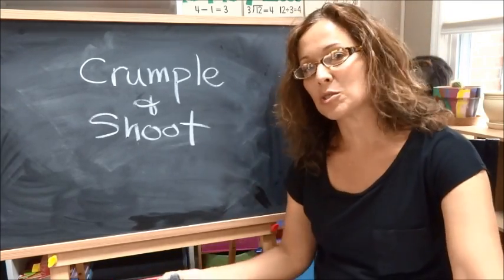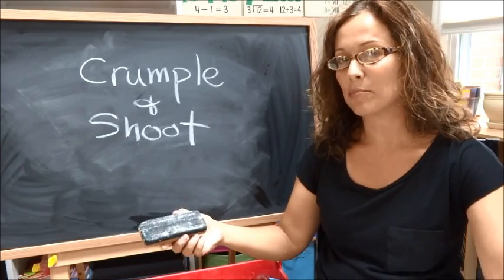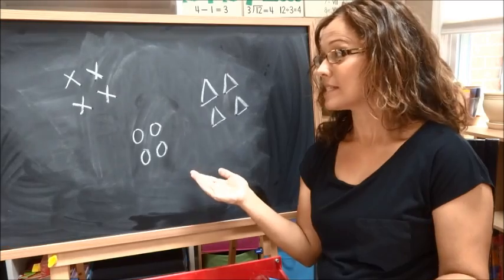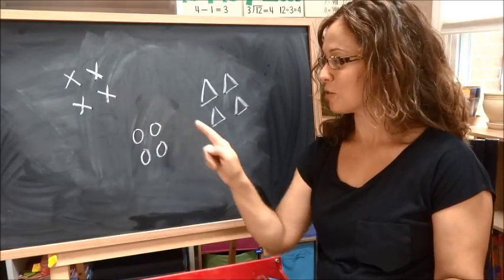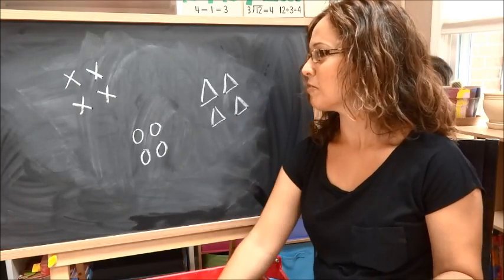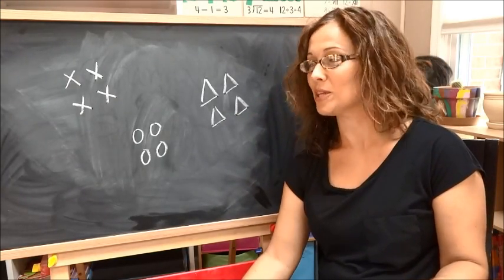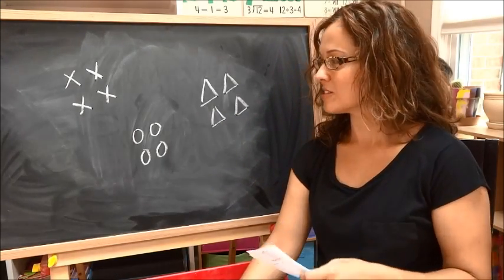The way that Crumple and Shoot is played is you start off by putting students into groups. Let's say you have a group of X's, a group of O's, and a group of triangles. You have been blessed with a class of only 12 students, so this will just make it easier.